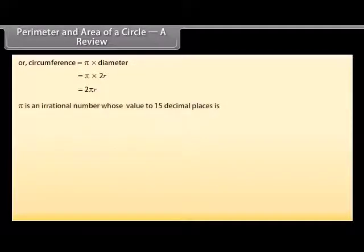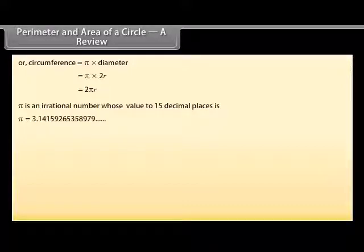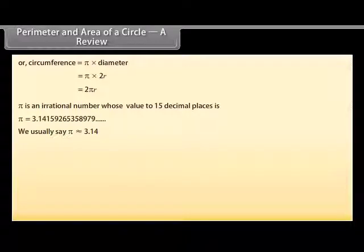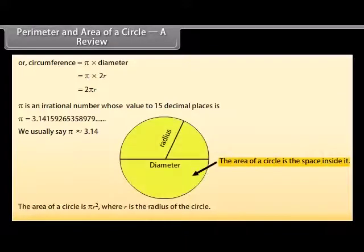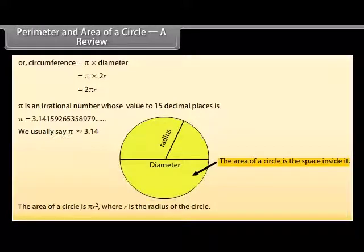A review: Pi is an irrational number whose value to 15 decimal places is 3.14159265358979. We usually say Pi is approximately equal to 3.14. The area of a circle is Pi R squared, where R is the radius of the circle.